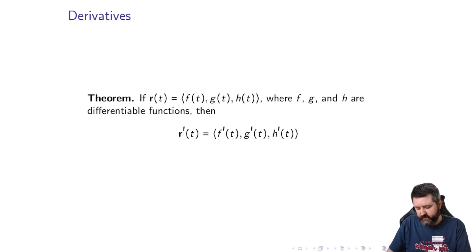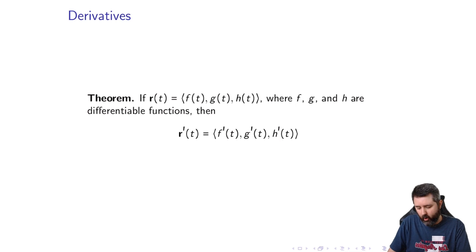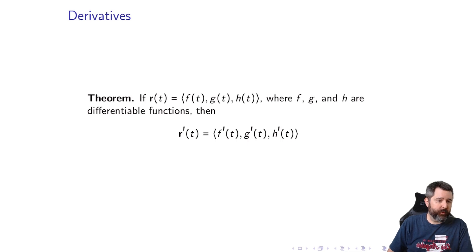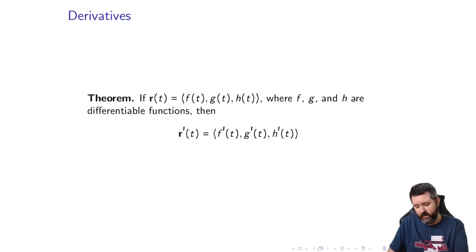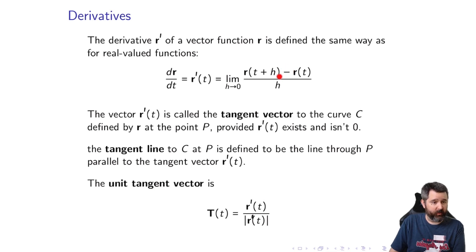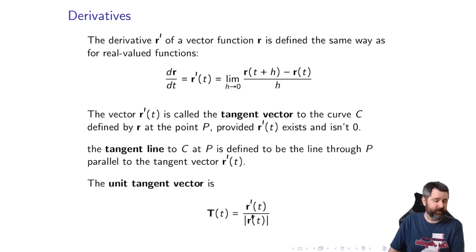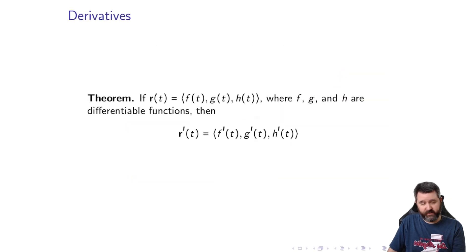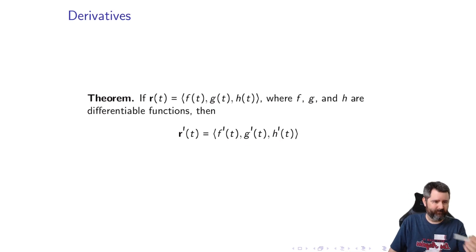Theorem: if r(t) has components f, g, and h, and these are all differentiable functions, then the derivative of r exists and has components f', g', and h'. The proof is straightforward — looking at the definition of the derivative, it's just a limit. When you take the difference of vectors you take the difference in components, scale by 1/h, and then take the limit of each component. So it shouldn't be surprising that this is the result.